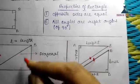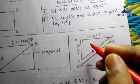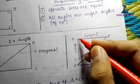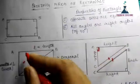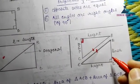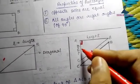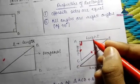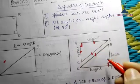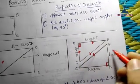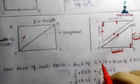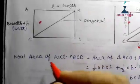Since all angles in a rectangle are 90 degrees, the sides are perpendicular to each other. So in each triangle, the breadth becomes the base and the length becomes the height. You can also see the breadth is the base and the length is the height.